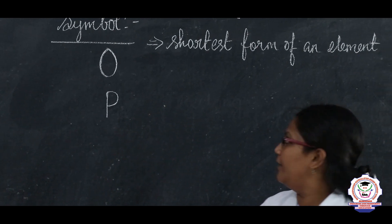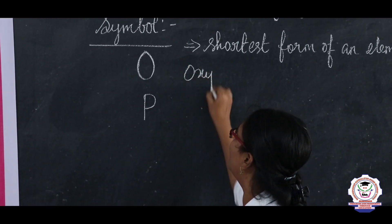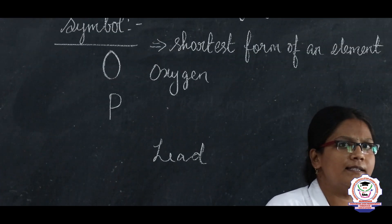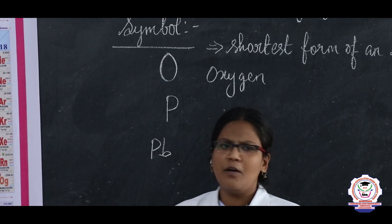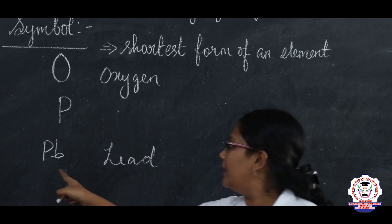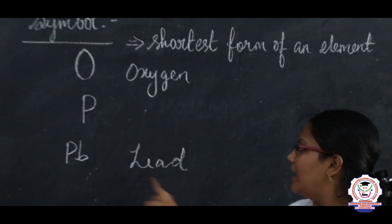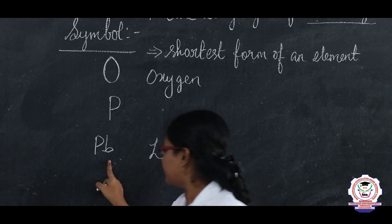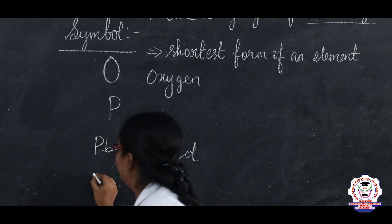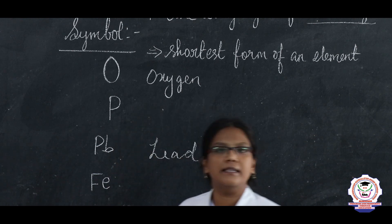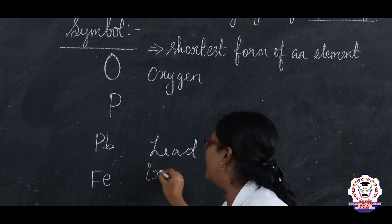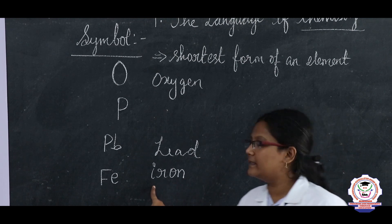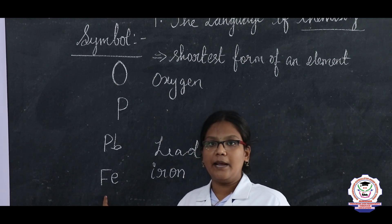If oxygen is represented as O, why can't lead be represented as L? But lead is represented by the symbol PB. PB is the Latin name of lead from which the symbol is derived. The Latin name of lead is plumbum, and PB is the symbol of lead. Likewise, ferrum — ferrum is the Latin name of the element iron. Iron is represented as Fe, and the Latin name of iron is ferrum.